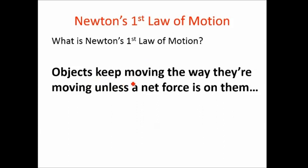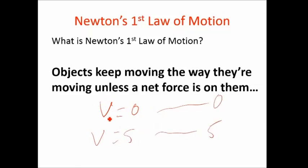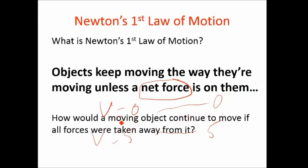Newton's first law of motion says that things that are moving keep moving the way they're moving unless there's a net force on them. If the velocity is zero, it stays zero. If the velocity is five, it stays five. They keep moving unless there's a net force — meaning forces don't cancel out and there's a leftover force. A moving object will continue to move if all forces are taken away. That's Newton's first law — sometimes stated as objects in motion stay in motion, objects at rest stay at rest.